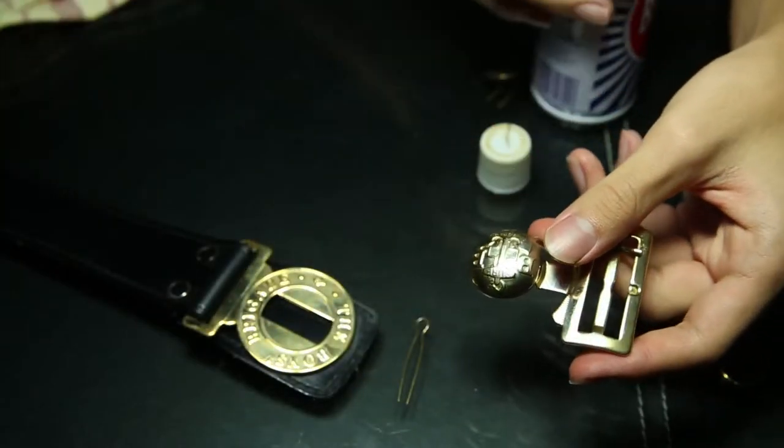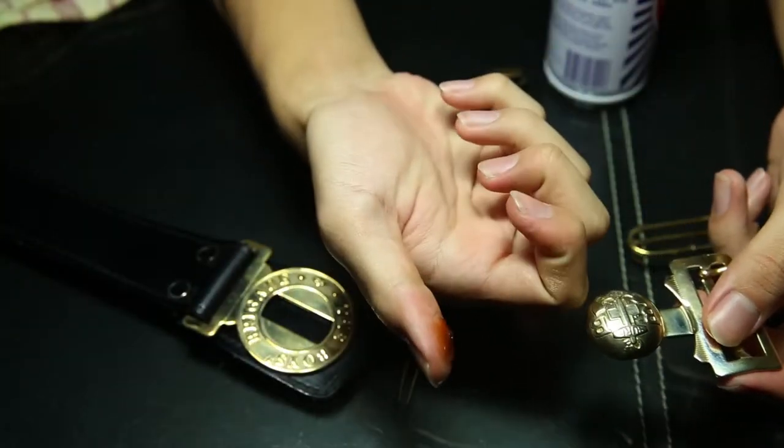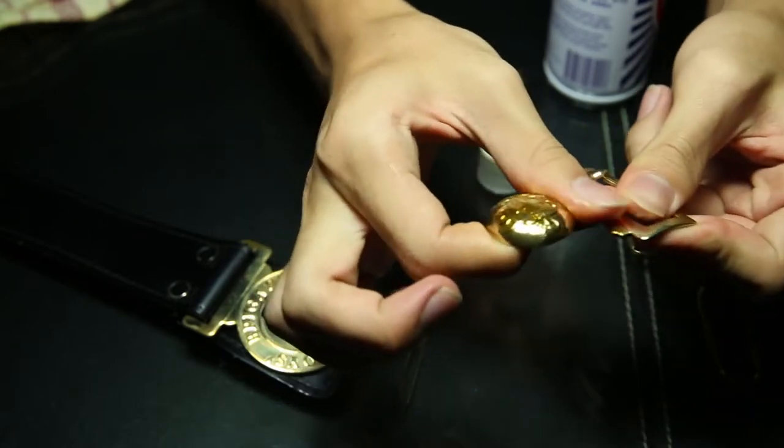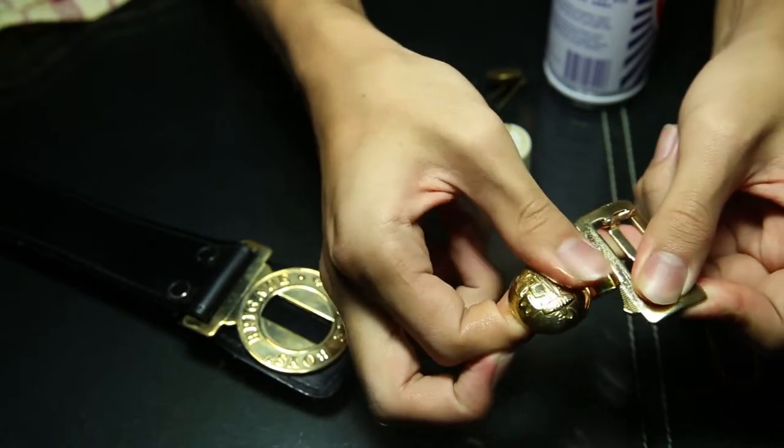After the first time, you do it all over again. Same process, just rub it all over the metal part. Do it a few times and your metal parts will be very shiny.